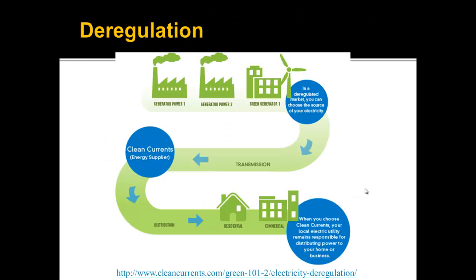A big thing happened a couple decades back called deregulation. It used to be that everything — the generation, the transmission, and the distribution — was owned by a central utility. Now the distribution is centrally owned by the utility, which in our area is Delmarva Power. But the transmission and generation is an open market.